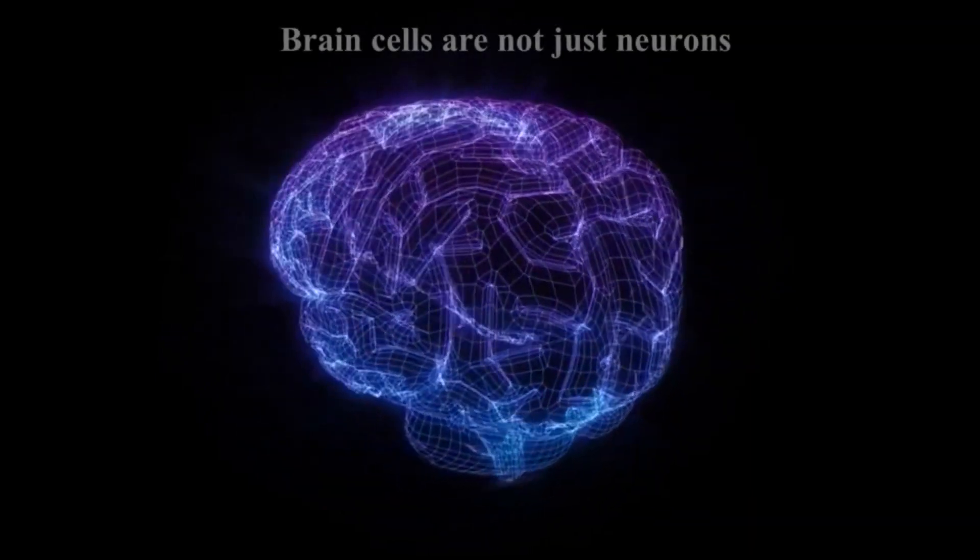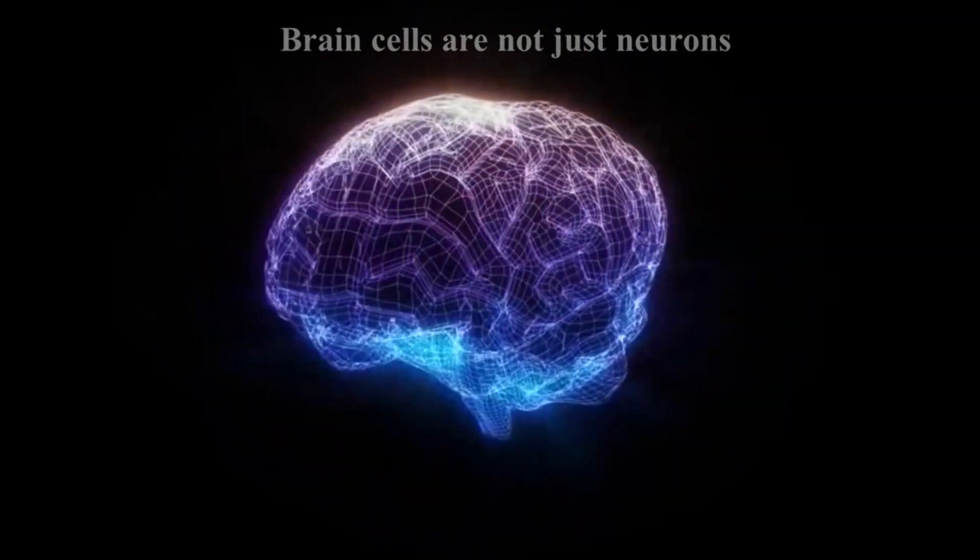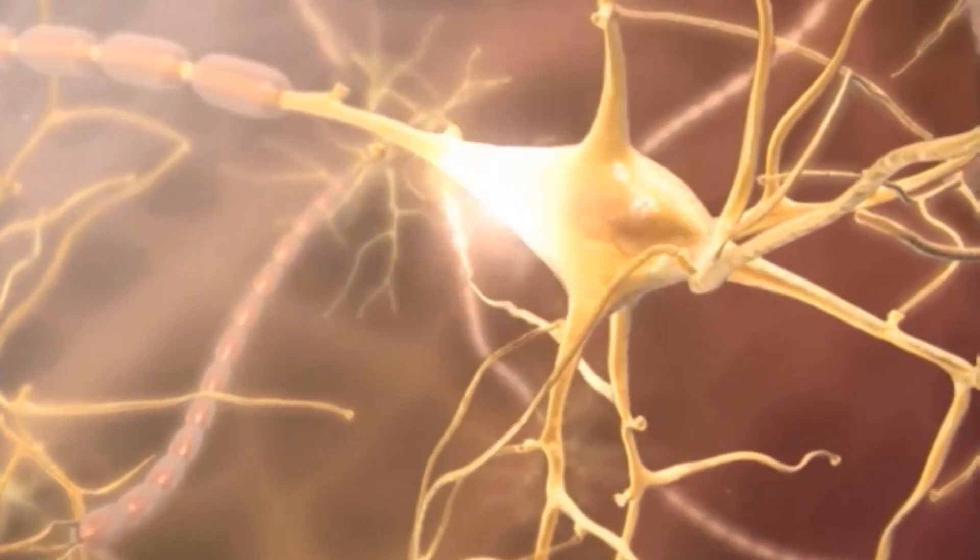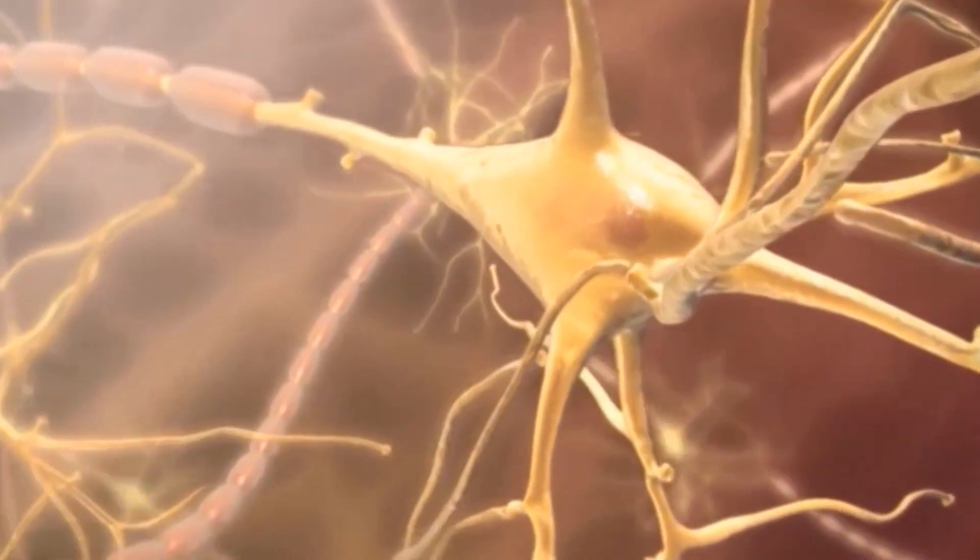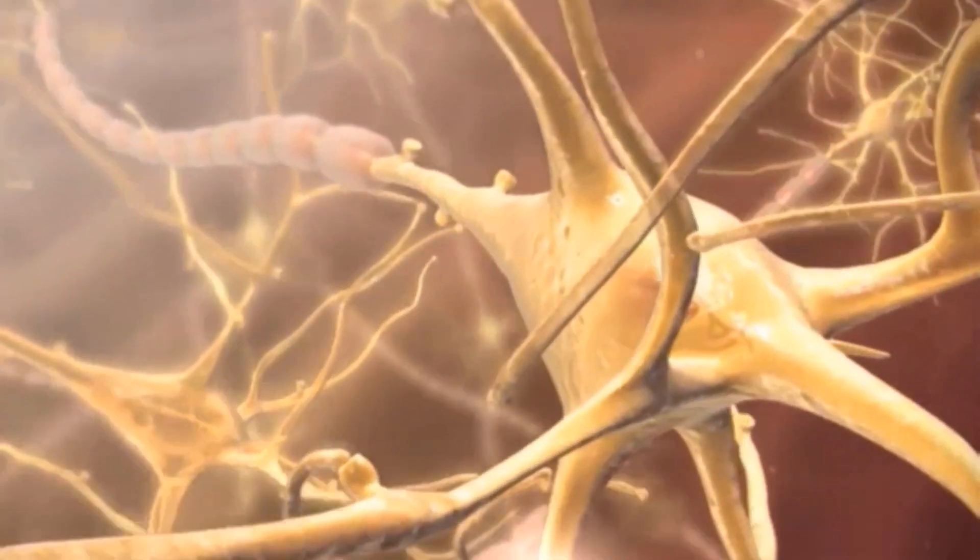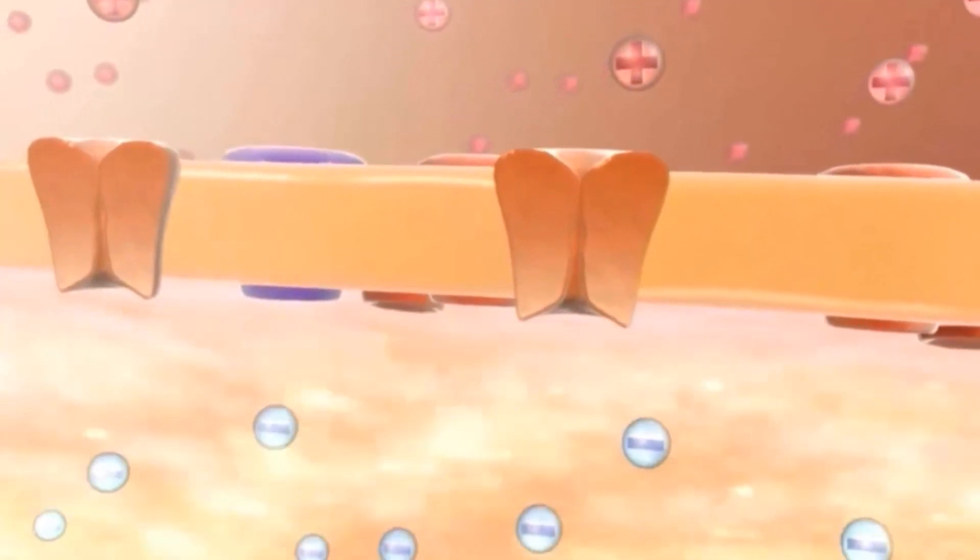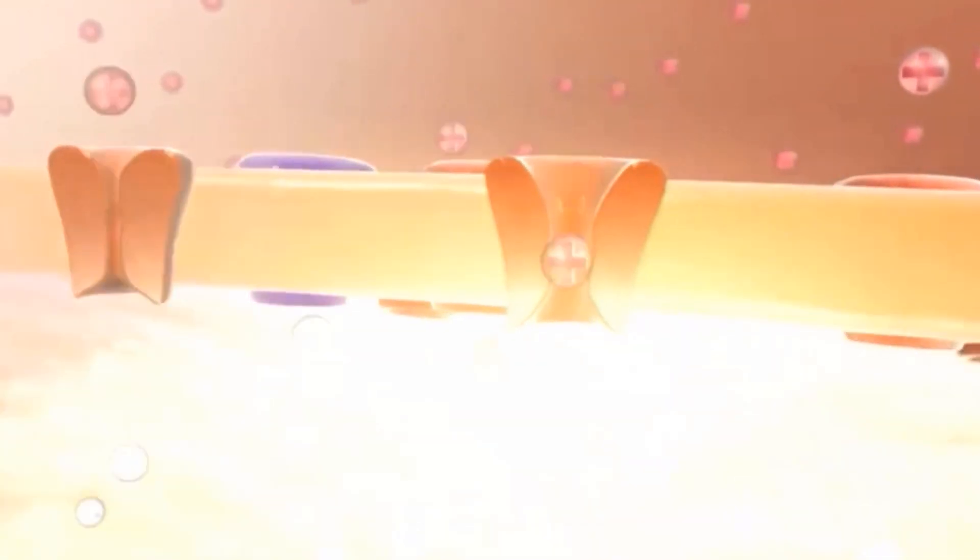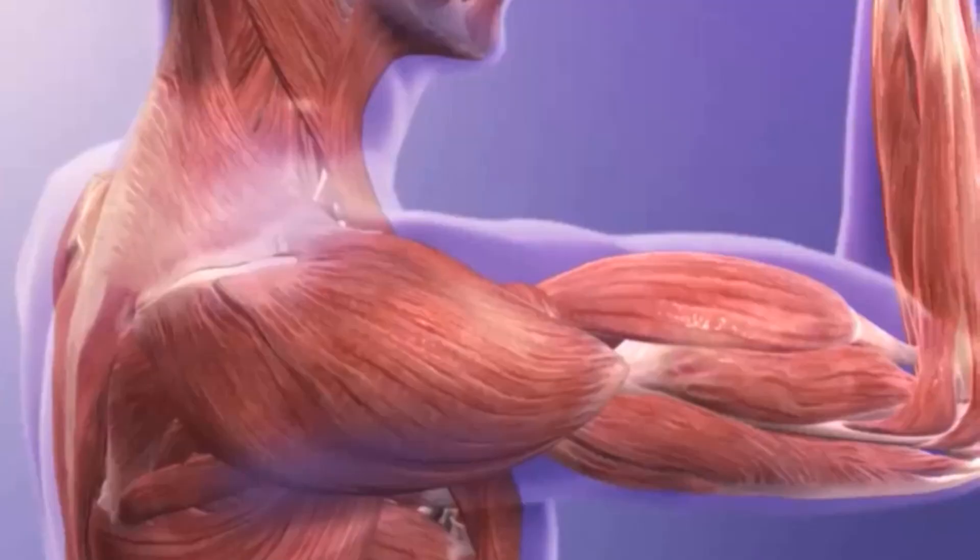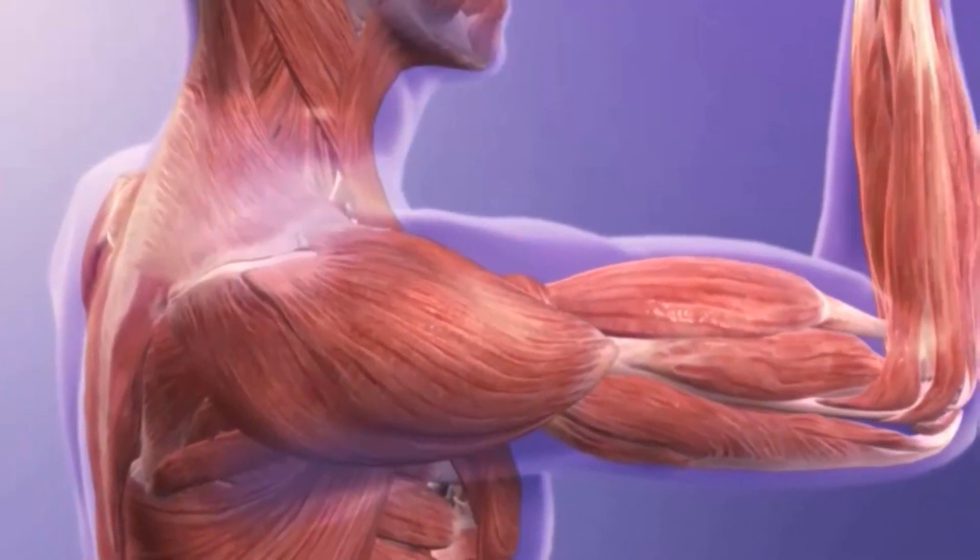3. Brain cells are not just neurons. There are about 10 glial cells per neuron. They provide neurons with access to nutrients and oxygen, separate neurons from each other, participate in metabolic processes, and the transmission of nerve impulses.